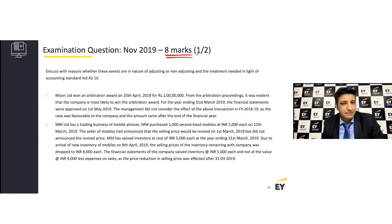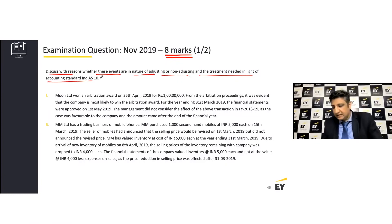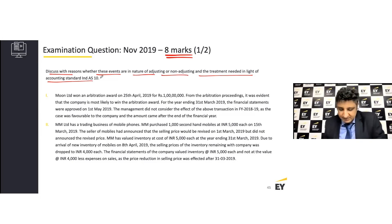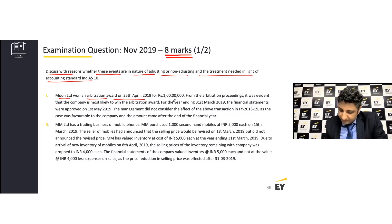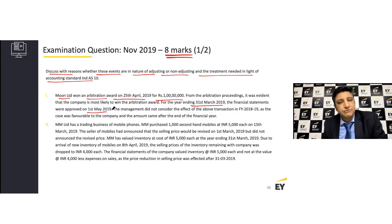The question says: discuss with reasons whether these events are in the nature of adjusting or non-adjusting and the treatment needed in the light of Ind AS 10. First instance: Moon Limited won an arbitration award on 25th April 2019 for rupees 1 crore. From the arbitration proceedings, it was evident that the company was most likely going to win — which it actually did. For the year ended 31st March 2019, financial statements were approved on 1st May 2019.